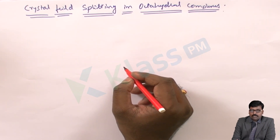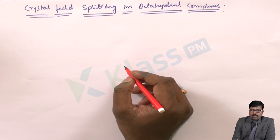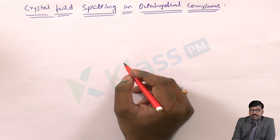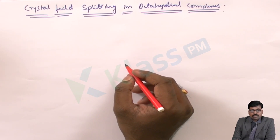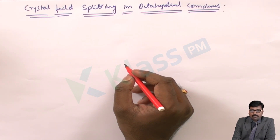This is quite the reverse of tetrahedral complexes. In a tetrahedral complex, the T2G group exerts more energy because the non-axial positions are the approaching points for the ligands in the tetrahedral geometry.